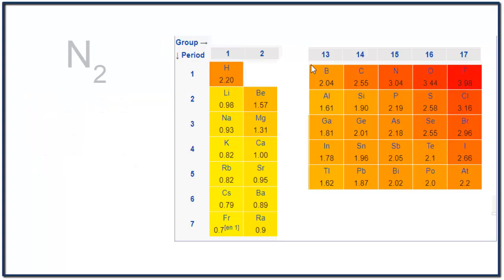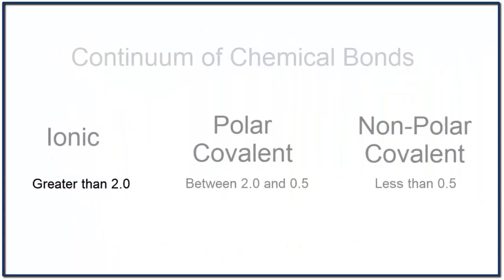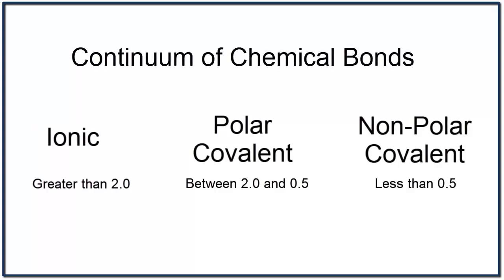For something like N2, nitrogen gas, we can look up the value for N, which is 3.04. So 3.04 minus 3.04 is 0. Back to our continuum, we see that a difference below 0.5 is nonpolar covalent. At this point, you probably realize you need to memorize the numbers in our continuum.